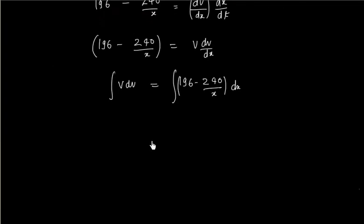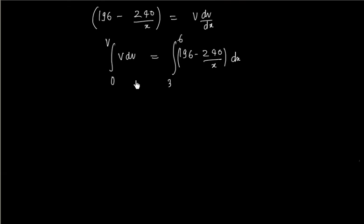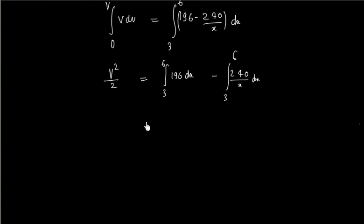So we will have v dv is equal to this integration. Initial velocity is zero, final is v. Initial x is 3 meters, final is 6. So this is v square by 2. Now this we can integrate separately. So one is 196 dx, 3 to 6, minus 240 by x dx, 3 to 6.